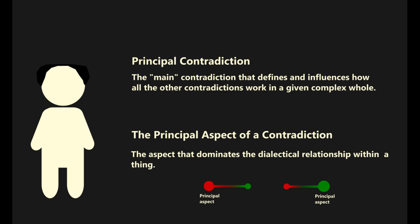Mao argues that even contradictions that seem permanent—productive forces versus relations of production, theory versus practice, base versus superstructure—can change.